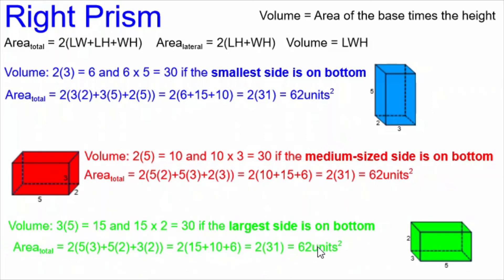If we put the largest side on the bottom, again, we get 2 times 31 and 62 units squared. The arrangement of the side lengths 2, 3, and 5 is slightly different as we fill in the formula, but the result keeps being the same.